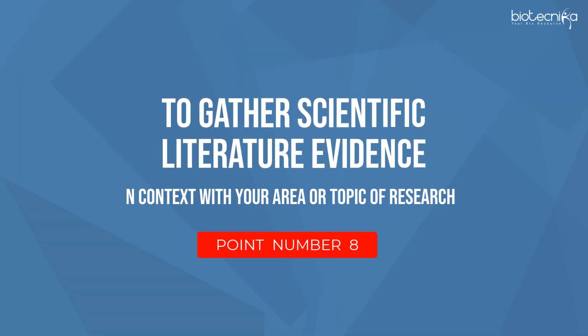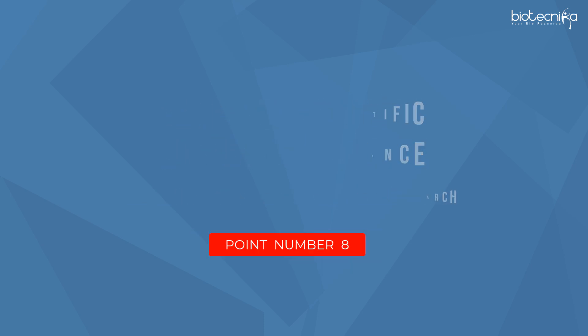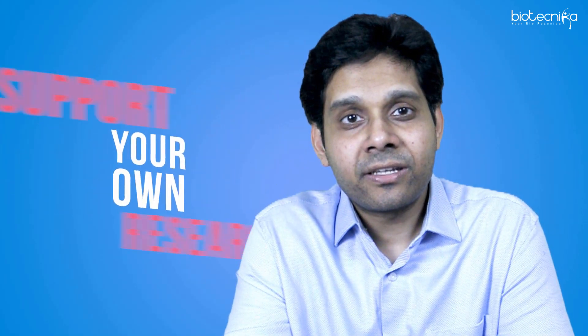Number eight: to gather scientific literature evidence in context with your area or topic of research. This is the only reason most people read research papers - they have to do their experiment and cite somebody else's work. You will be able to gather credible scientific evidence to support your own research. When you cite somebody else's research paper, you actually reflect that you have done your own research, and that way you develop credibility for yourself.